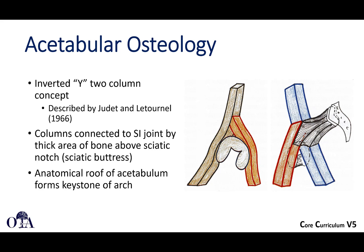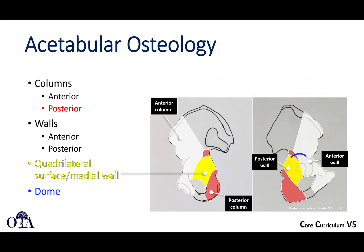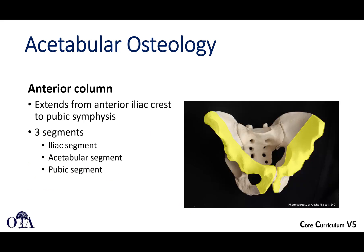The anatomic roof of the acetabulum forms the keystone of this arch. The roof is also called the source seal. So you have the anterior and posterior columns, the anterior and posterior walls. You also have the quadrilateral surface or medial wall — that's where the obturator internus muscle resides, which is the medial part of the acetabulum. Occasionally if you have a fracture with protrusio, that quadrilateral surface may be disrupted. And then you have the dome.